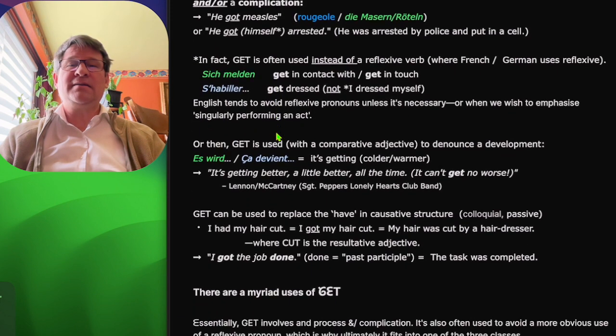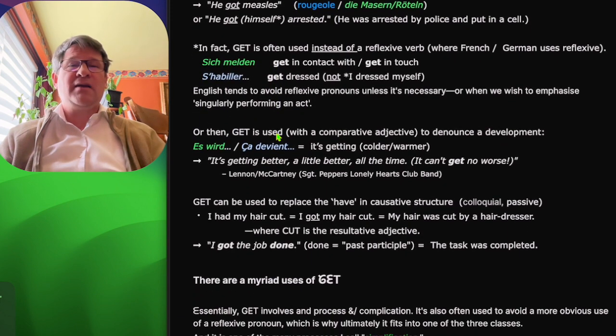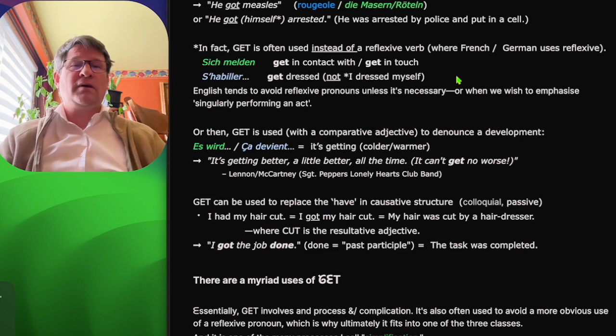In fact, get is often used instead of a reflexive verb, where French and German use reflexive. So get in contact or get in touch with, get dressed. English tends to avoid reflexive pronouns unless it's absolutely necessary, or when we wish to emphasize singularity, singularly performing an act.